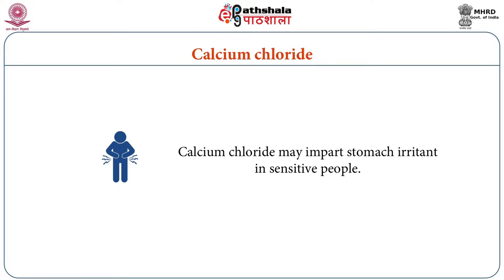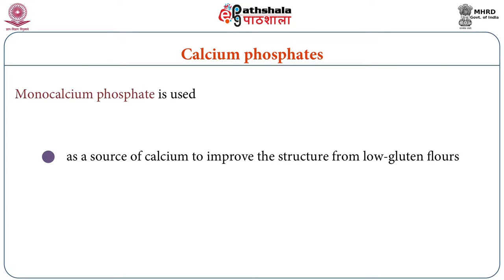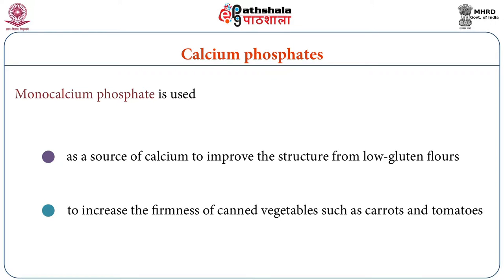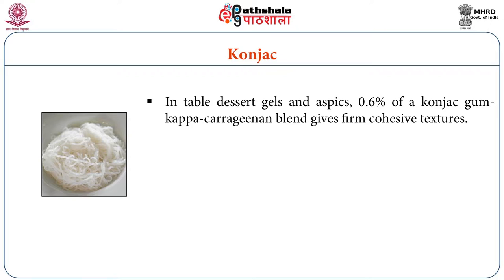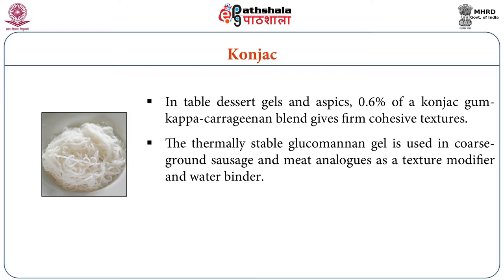Calcium chloride may impart stomach irritation in sensitive people. Monocalcium phosphate is used as a source of calcium to improve the structure of low-gluten flours. It is also used to increase the firmness of canned vegetables such as carrots and tomatoes. In table dessert gels and aspics, 0.6% of konjac gum kappa-carrageenan blend gives firm cohesive textures. The thermo-stable glucomannan gel is used in coarse ground sausages and meat analogues as a texture modifier and a water binder.